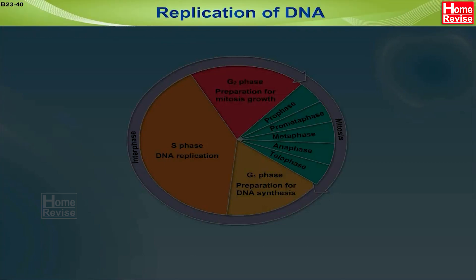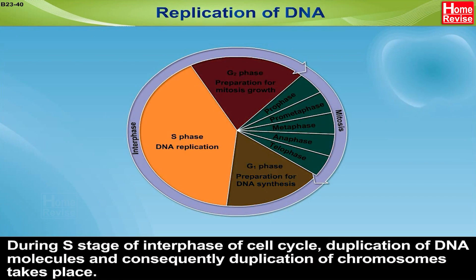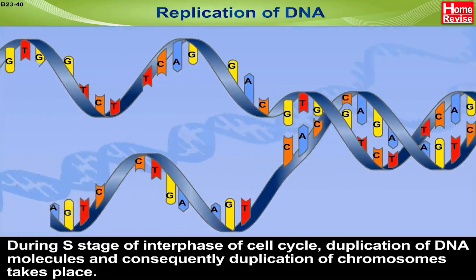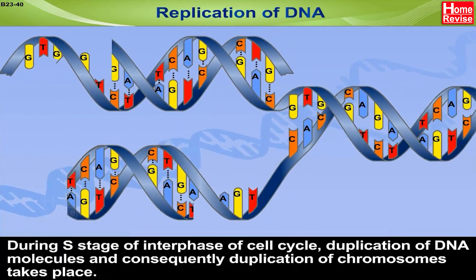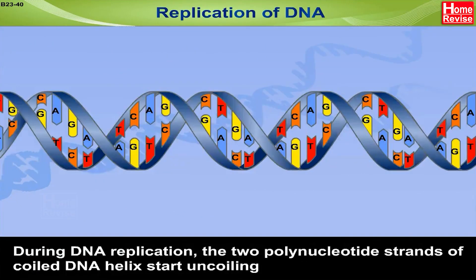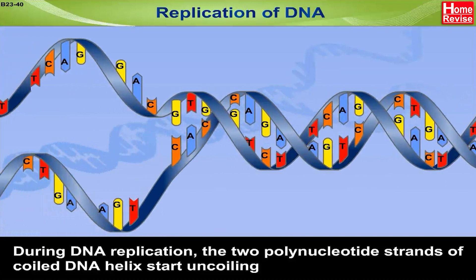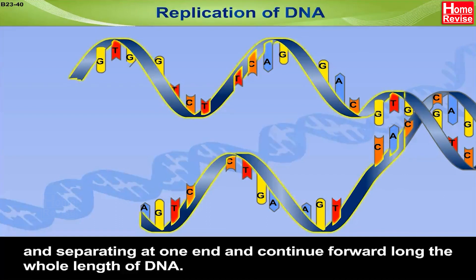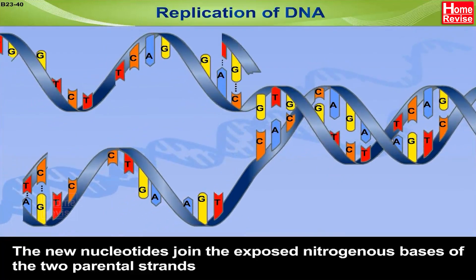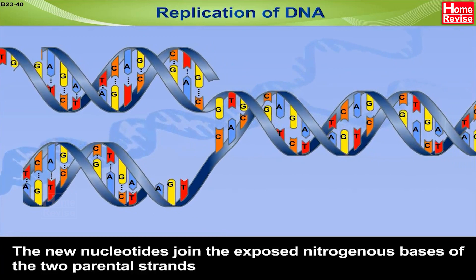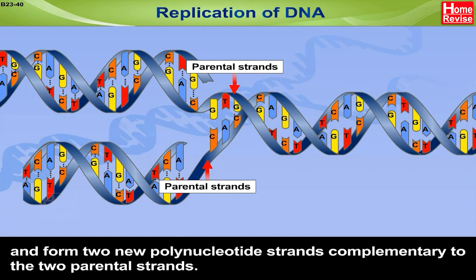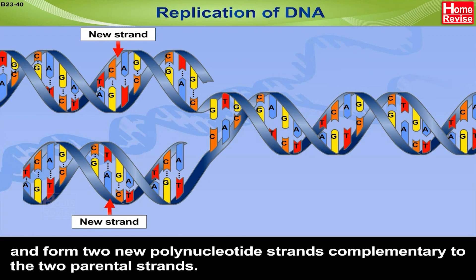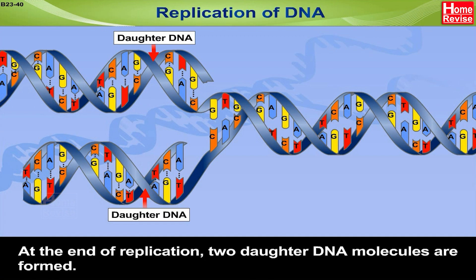Replication of DNA: During the S stage of interphase of the cell cycle, duplication of DNA molecules and consequently duplication of chromosomes takes place. During DNA replication, the two polynucleotide strands of the coiled DNA helix start uncoiling and separating at one end and continue forward along the whole length of DNA. New nucleotides join the exposed nitrogenous bases of the two parental strands and form two new polynucleotide strands complementary to the two parental strands. At the end of replication, two daughter DNA molecules are formed.